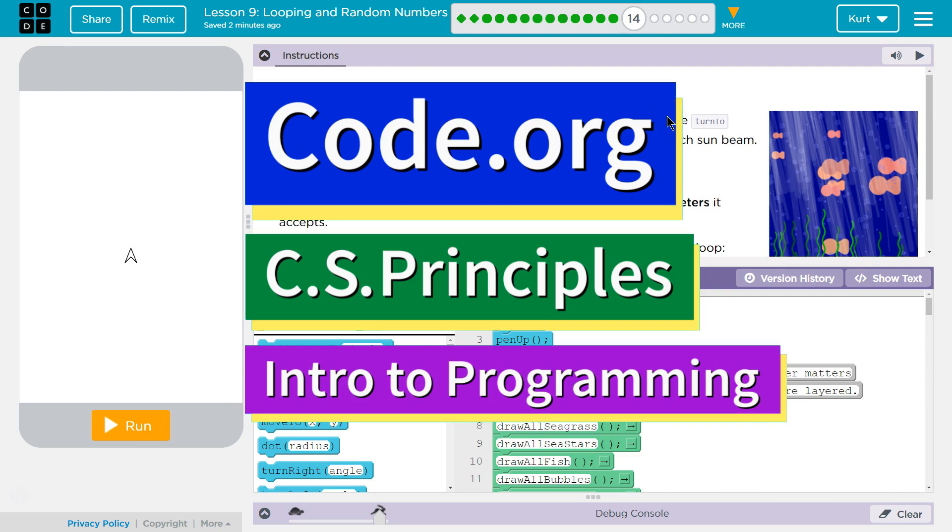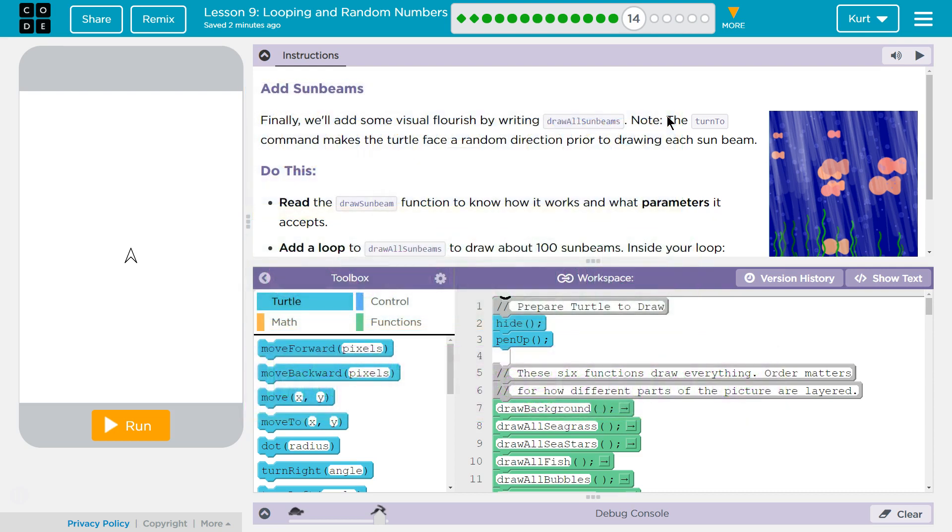This is code.org. I'm currently working on their CS Principles course. I'm on Unit 3 Intro to Programming Lesson 9, Looping and Random Numbers, Part 14. Add Sunbeams.